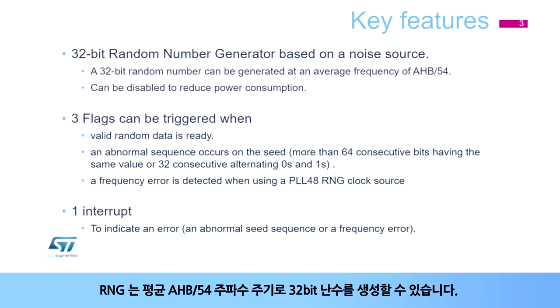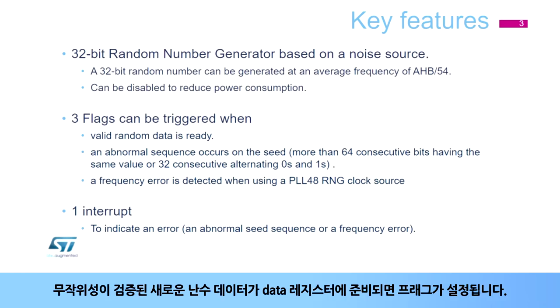The RNG is able to generate a 32-bit random number at an average frequency of AHB/54. A flag is set in the data register when new random data is ready and validated.